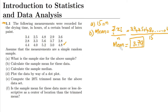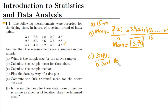For part c we calculate the sample median. The difference between mean and median is that the mean is the average of the data, while the median is basically the midpoint — the mid sample. To find the median, we follow some steps. The first step is to sort the data.